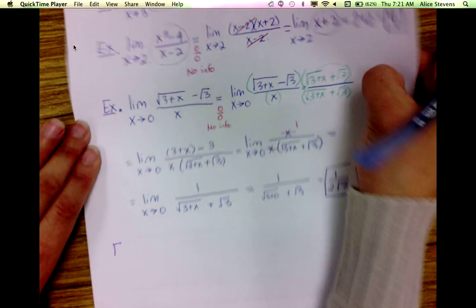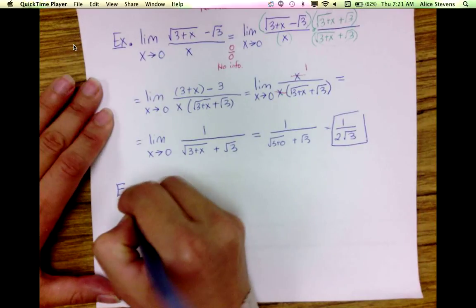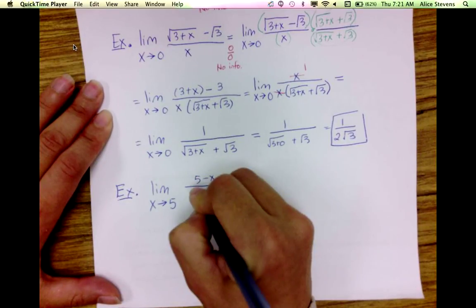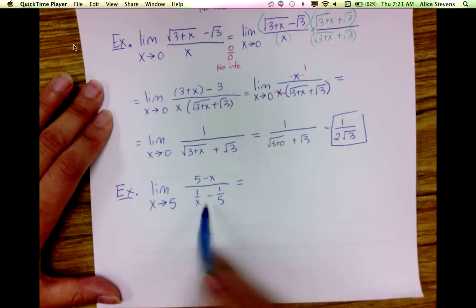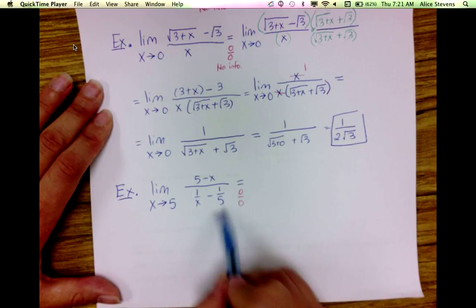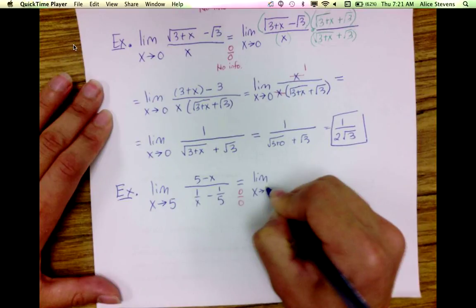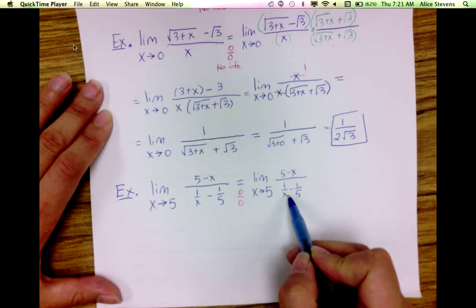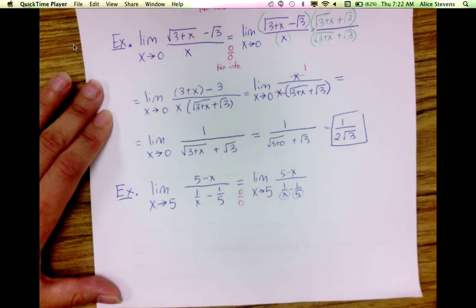Let's do one more example. I'm going to take the limit as x approaches 5. If I try direct substitution, once again I get 0 over 0. However, this is a complex rational expression, so one thing I can try is to simplify it. I'm going to multiply by the LCD of the denominators to clear the fractions.